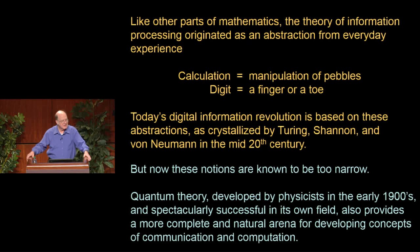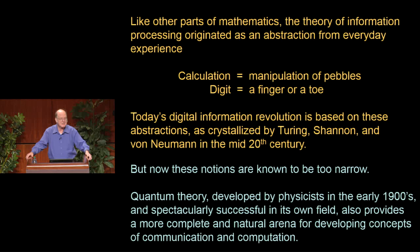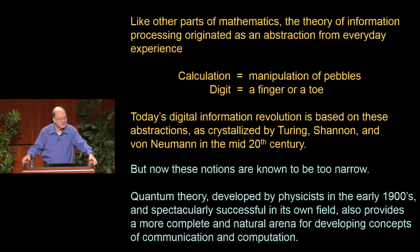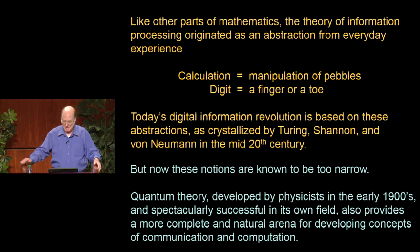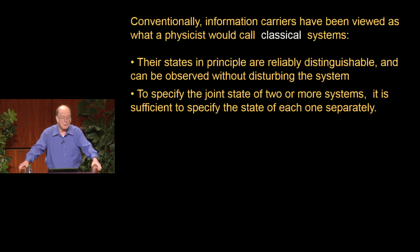Unfortunately, these abstractions are too narrow. The quantum theory, which was developed in the early 20th century by physicists and chemists, now provides a more complete and natural arena for developing the abstract concepts of communication and computation. What people who do information processing and storage and computing have used as information carriers—like a signal on an ethernet cable or a hole in a punch card—were what a physicist would call classical systems.